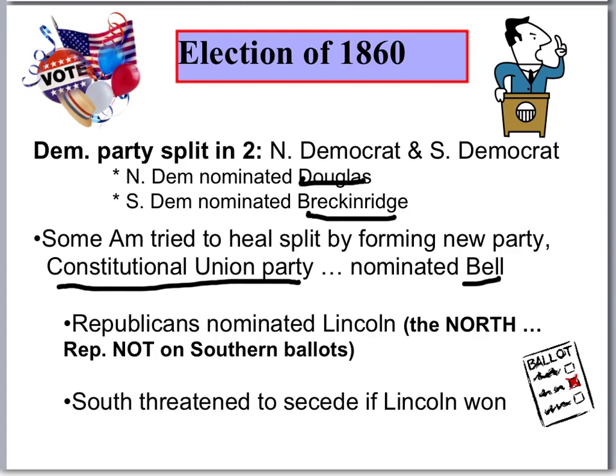The Republicans meet in Illinois and there are two candidates for president: Abraham Lincoln and William Seward. Seward would later become Lincoln's Secretary of State. After three days, the party nominates Abraham Lincoln. The South has threatened to secede if Lincoln wins, because there's no doubt where Lincoln stands. He has already said he will not allow slavery to expand. He did not say anything about abolishing slavery — he's just not going to let it expand. But the South says no way: if Lincoln wins, we are going to leave.